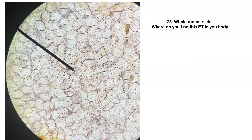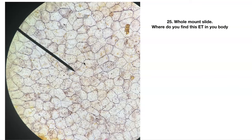Number twenty-five — whole-mount slide. This is simple squamous mesothelium. Where do you find it? This forms your serous membranes: visceral and parietal pleura around the lungs, visceral and parietal pericardium around your heart, and visceral and parietal peritoneum in your abdominal cavity.